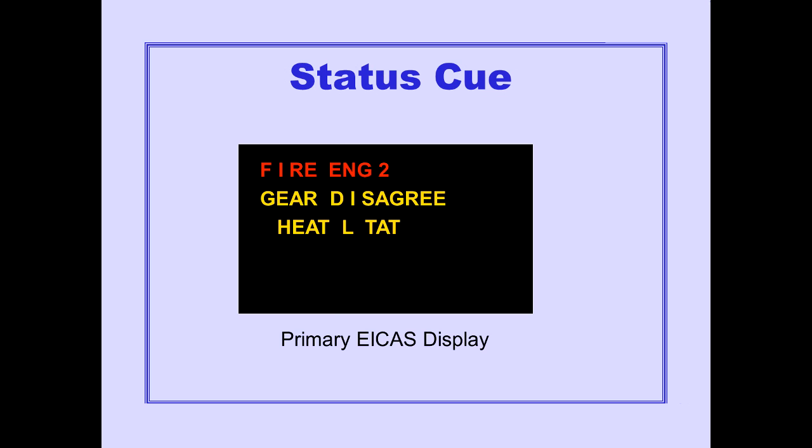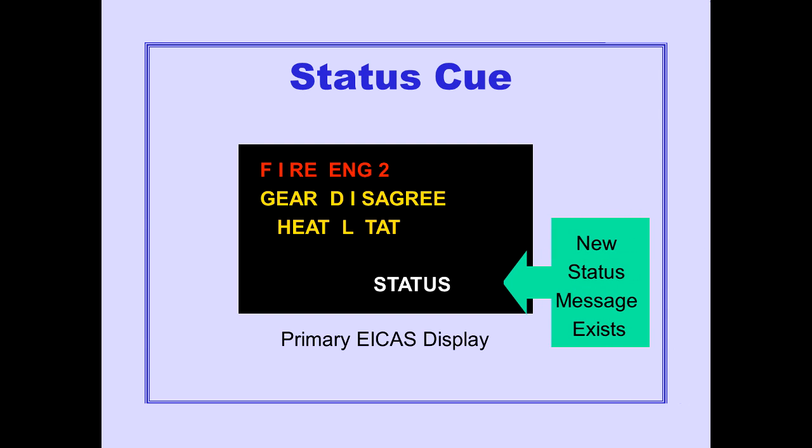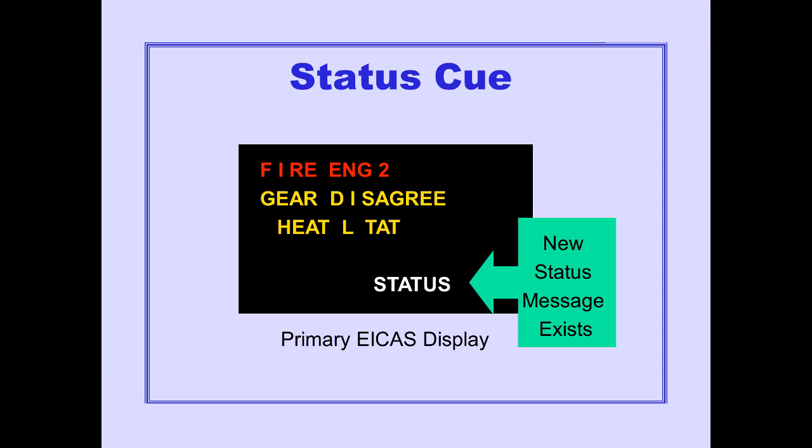If the status display is not being viewed and a new status condition occurs, a status queue is displayed on the primary ICAST display at the bottom of the message area to indicate that a new status message exists. Pushing the status display switch causes the status display to appear with the new status message at the top of the message area, followed by any previous status messages that still apply. The status queue on the primary ICAST display is no longer displayed.